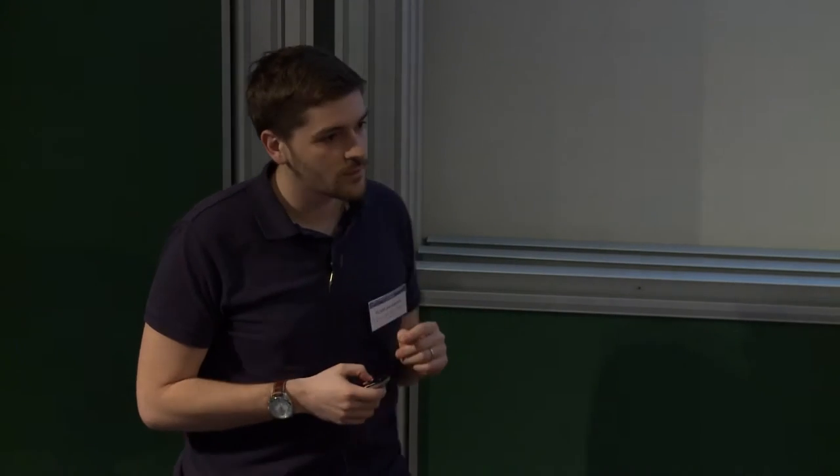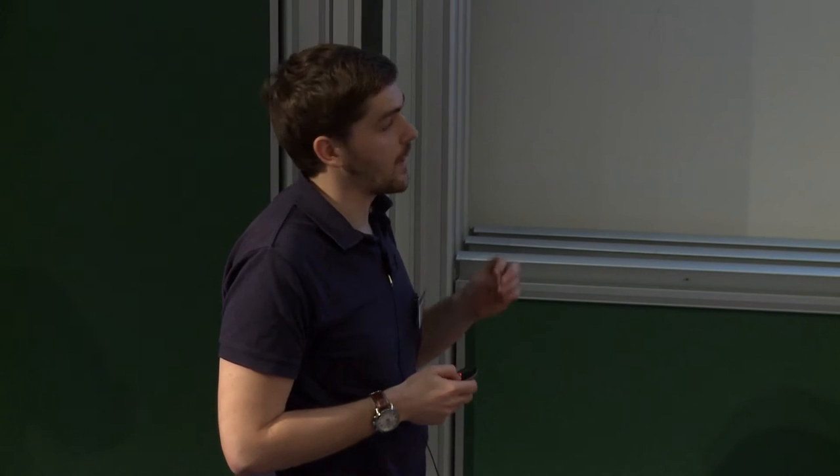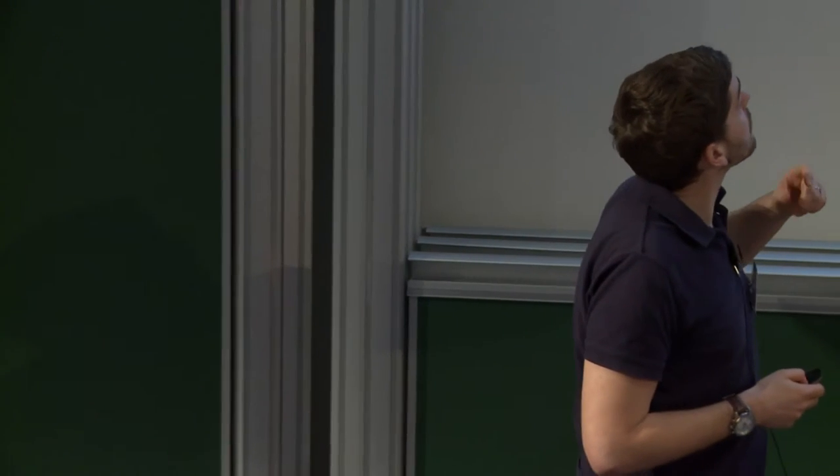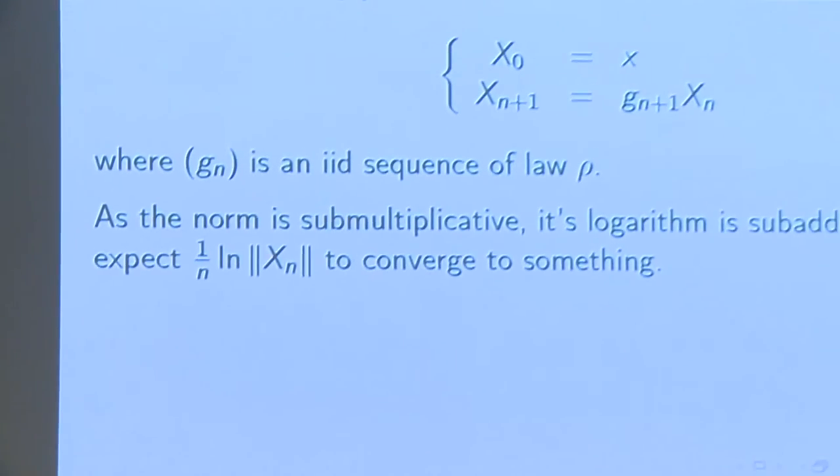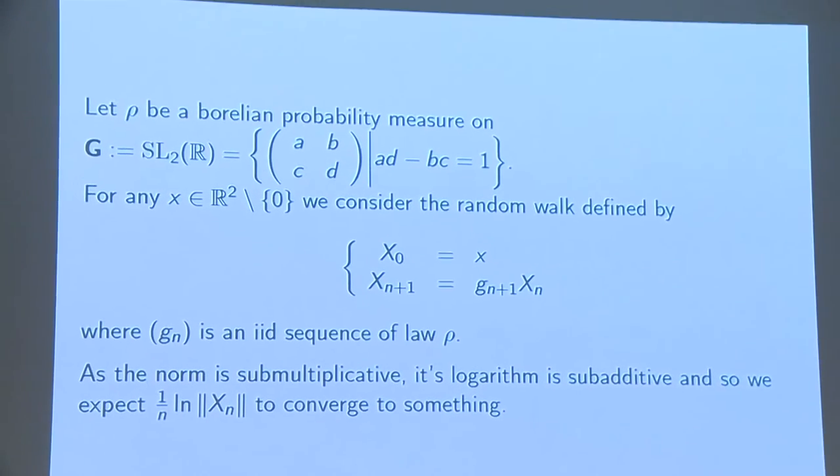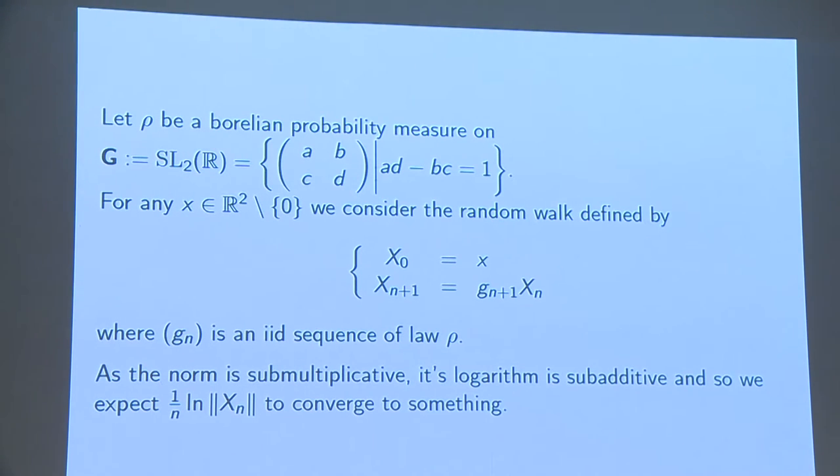Here's my plan and I will start with the probability measure on SL₂(R). So these are the invertible matrices with coefficients in R and with determinant 1. And I do a random walk on R² without 0. We can define it like this: I take a point in R² that is non-zero and I just multiply it by my matrices and this defines a random walk.